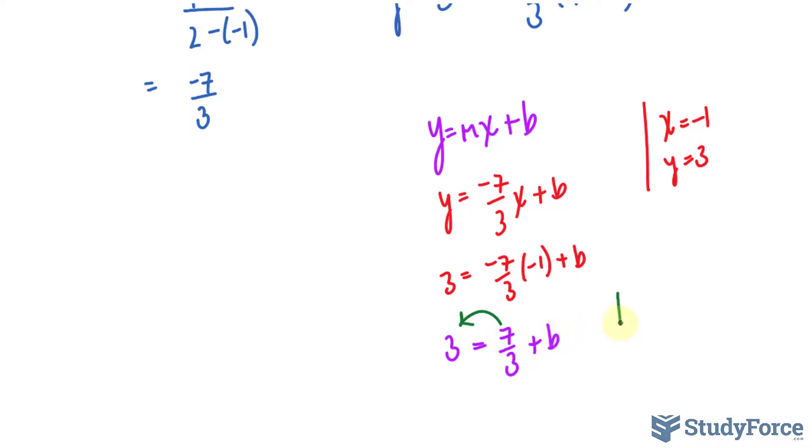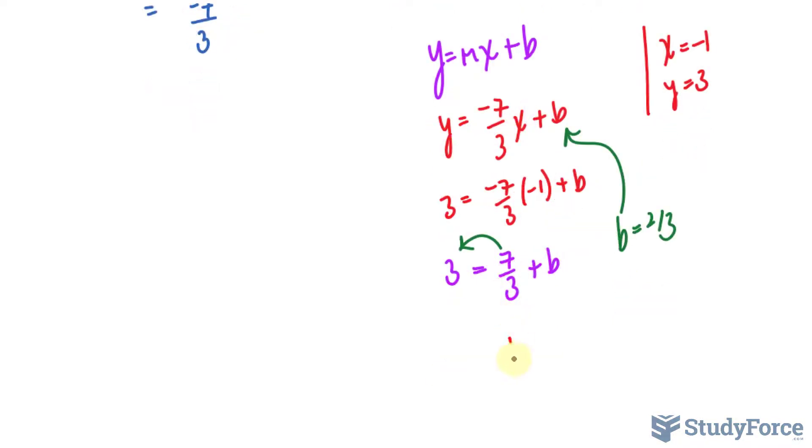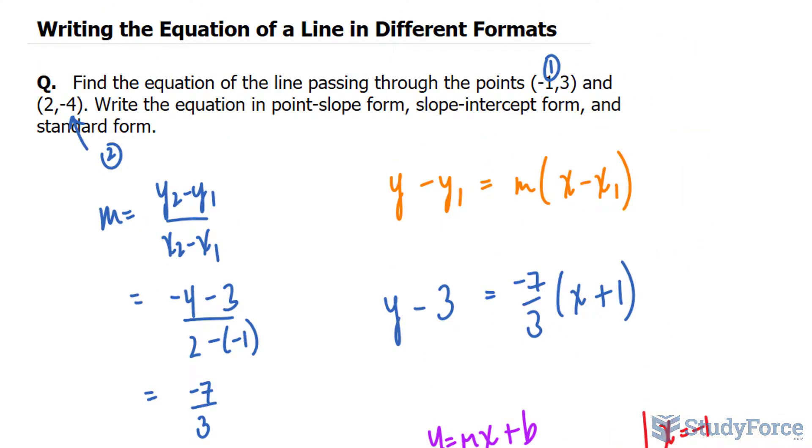So b happens to be 2 over 3, and I'll substitute that now into here. Our final answer is y is equal to minus 7 over 3x plus 2 over 3. That right there is slope-intercept form.